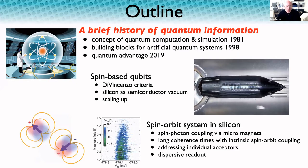The second part focuses on spin-based qubits, looking at the DiVincenzo criteria, the environment, and the challenges of scaling such a system up. And then finally, a focus on our work where we discuss spin-orbit systems in silicon and see how they can be explored in the context of scaling up.